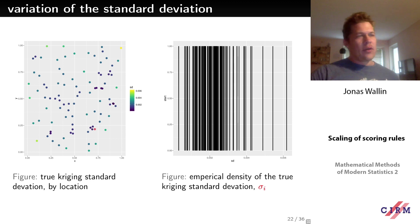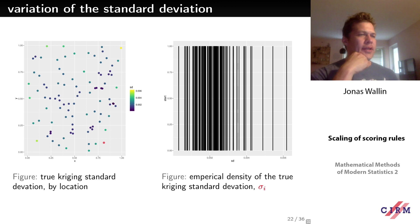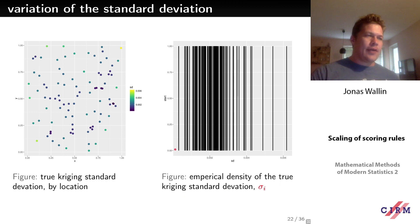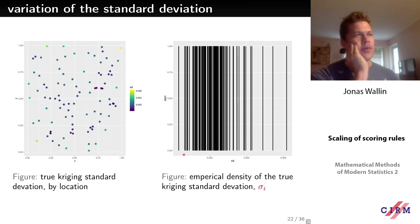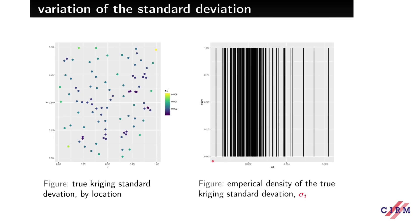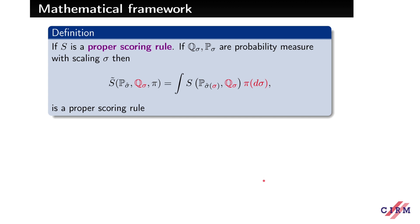We can see an empirical density of the predictive standard deviations across all observation locations. Each curve represents a point's standard deviation. This does not fit neatly into the framework of a single predictive measure P versus a single true measure Q, because if you're further away you will have a larger standard deviation both in your prediction and the true predictive measure — so any reasonable model should capture this behavior.